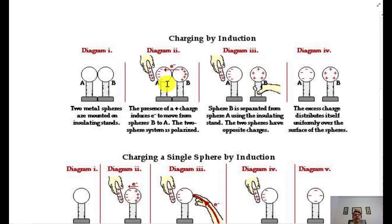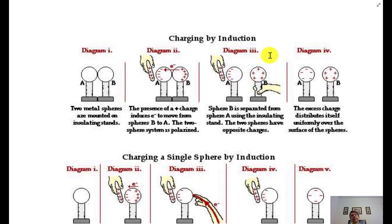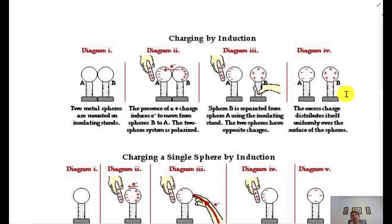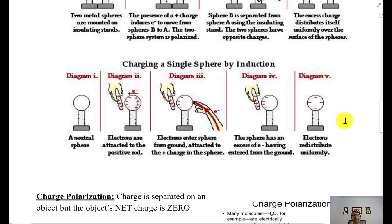If you keep the rod there and then separate the two spheres, creating a gap, the electrons don't like to jump that gap through air. Ball B's charge spreads out because it's far from the other ball, but electrons still stay near the charged rod until you move it. When you move the rod away, sphere A's charge also spreads out. Both spheres are charged by induction — no charge ever left the original object. You can also do this with a single ball.